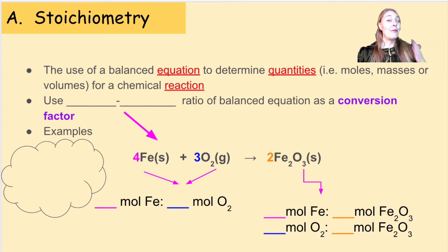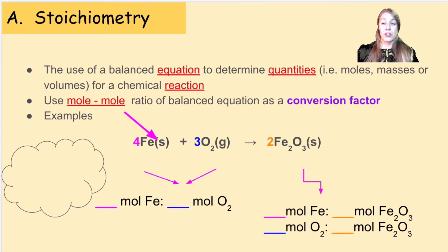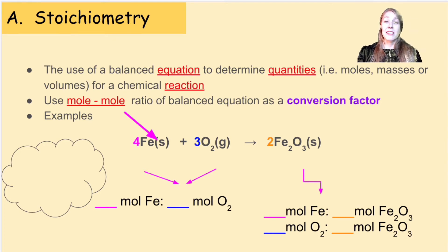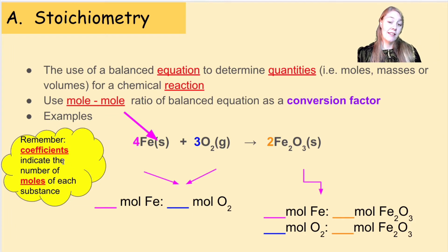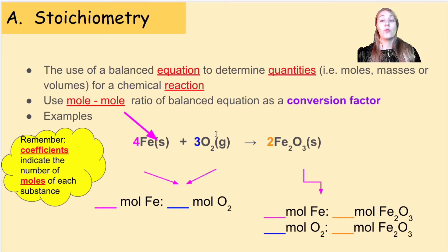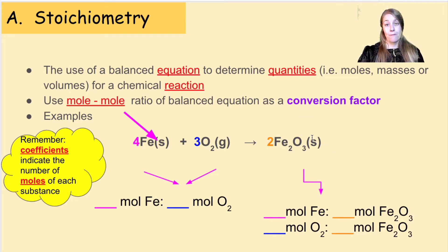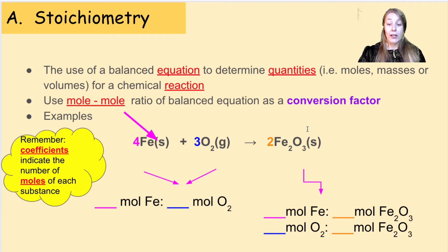In order to do that, the key to stoichiometry is we're using a mole-to-mole ratio of our balanced equation as a conversion factor. To find the moles of any substance in a balanced chemical reaction, we just need to look at the coefficients. So in this balanced equation, we have four moles of Fe reacting with three moles of oxygen to produce two moles of Fe₂O₃. That's where our mole ratio is going to come from — our balanced equation.